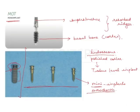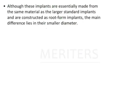Although these implants are essentially made from the same material as larger standard implants and constructed as root-form implants, the main difference lies in the smaller diameter. These implants can be made of titanium or stainless steel — they are smaller in size but look similar to root-form or endosseous implants. The main difference is their smaller diameter, which is why they are known as mini implants.